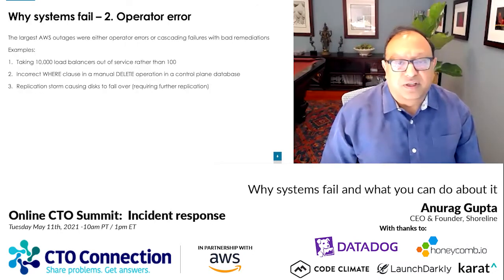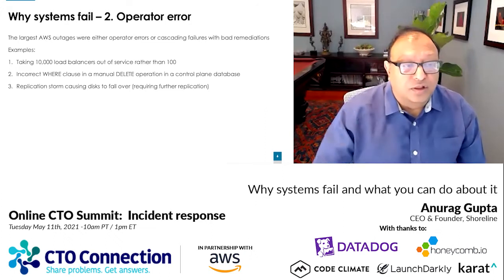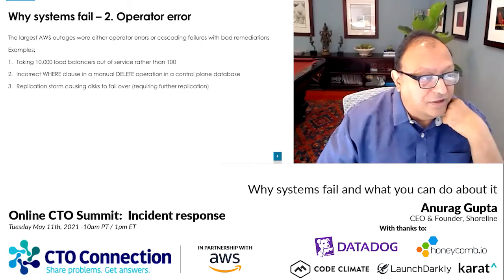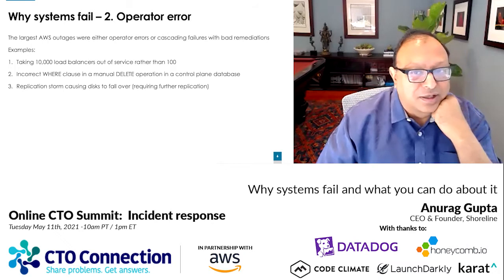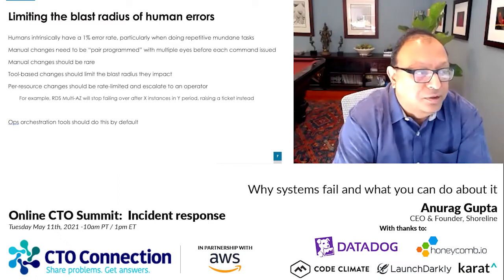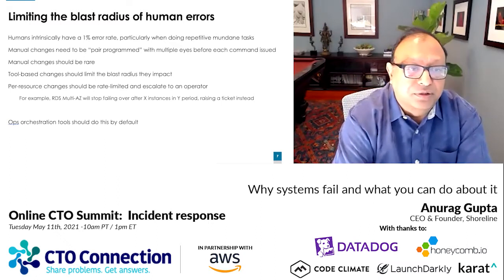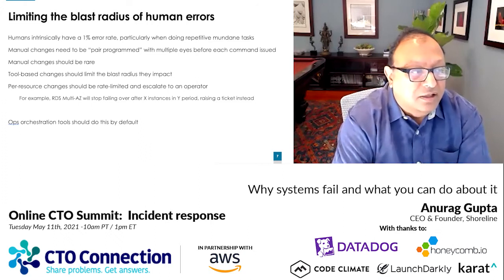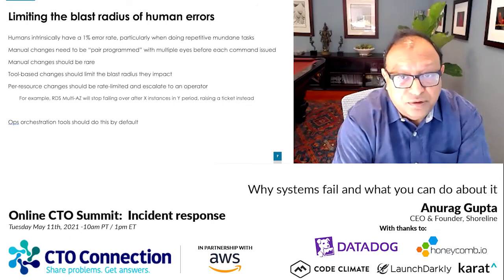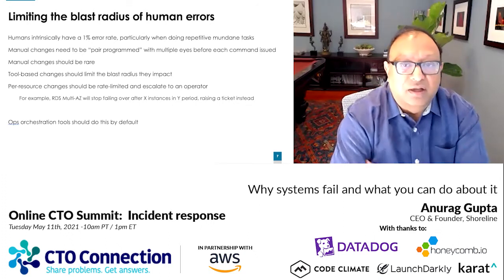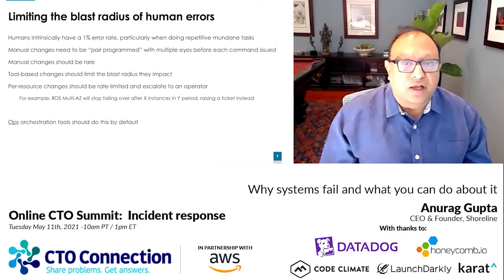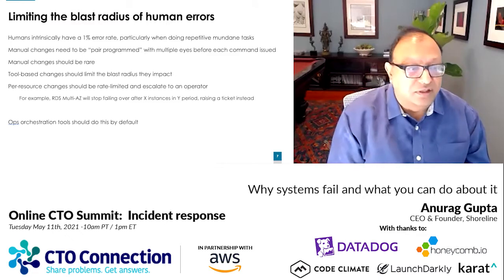The second reason systems fail is operator error. Those were the largest outages we had. The main thing to realize is that humans have an error rate, particularly when doing repetitive mundane tasks. So you either need to pair program if making a manual change, make manual changes excessively rare, or push those into some sort of operator console where changes limit the blast radius at core.